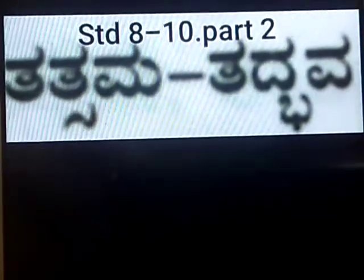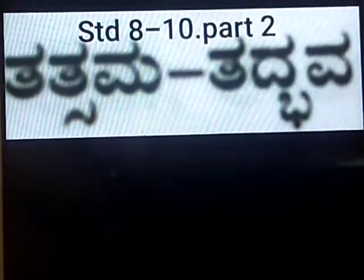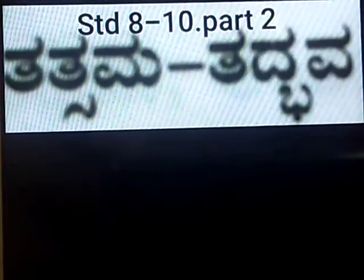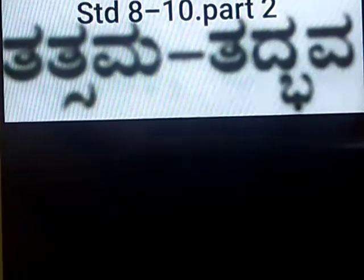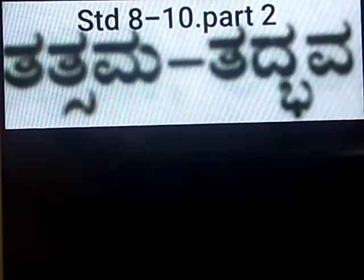One example: 'Aashcharya' — this is a Sanskrit word. If we speak it in Kannada with our language characteristics, we change it. That changed form is called Tadbava. So 'Aashcharya' becomes its Tadbava form in Kannada. Understood?